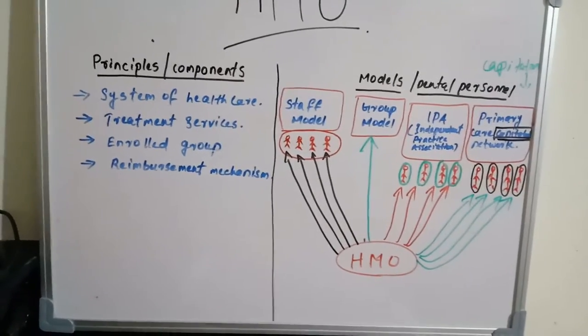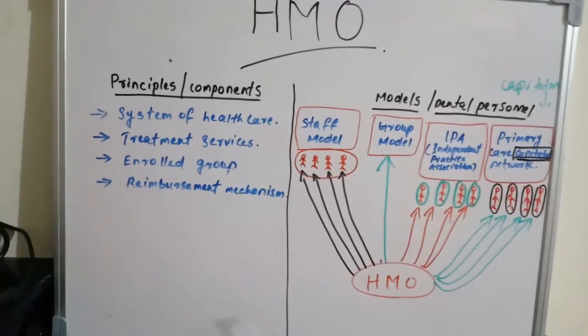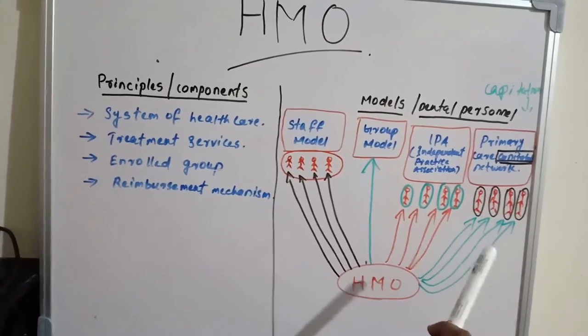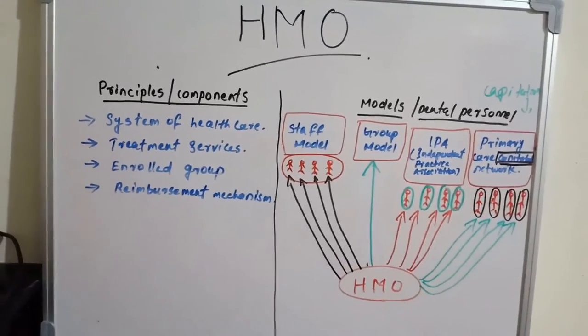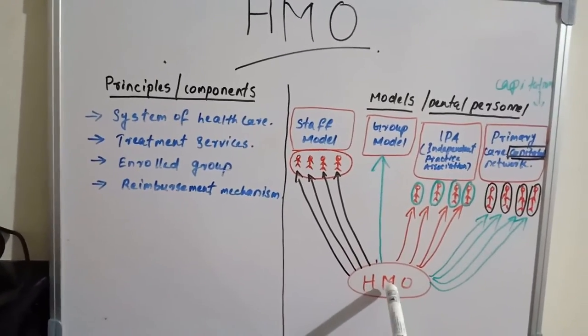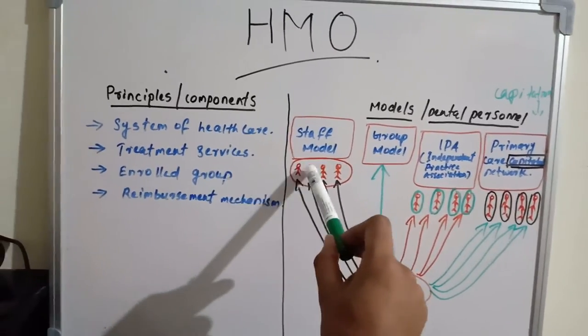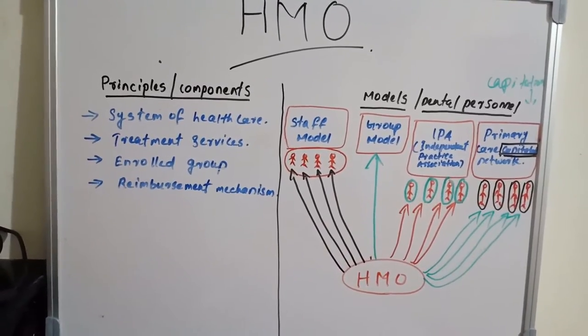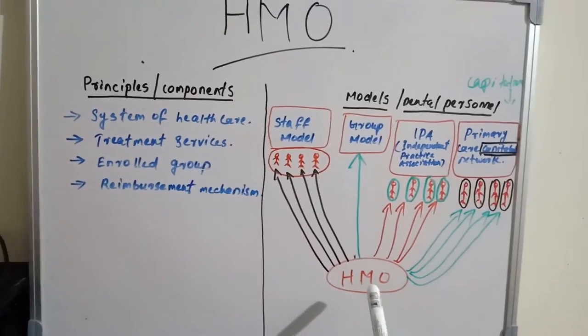These are the models or how the dental personals are being reimbursed by the HMO. The first is staff model. The HMO repays every person in the staff model, so all staffs of that staff model HMO pays individually.